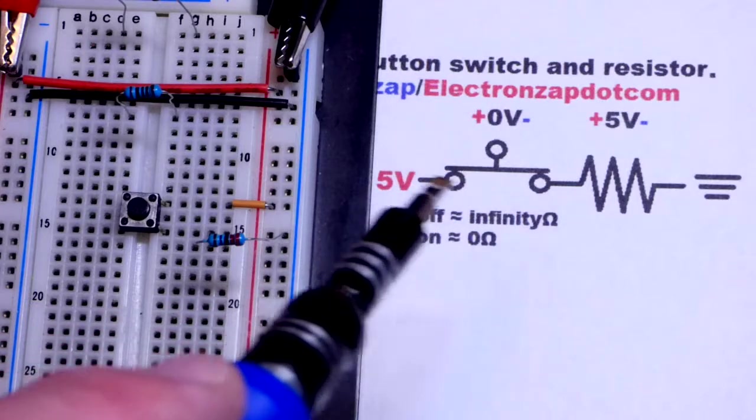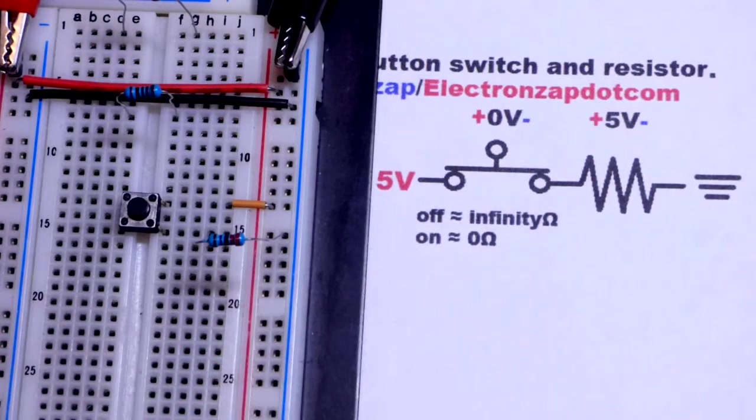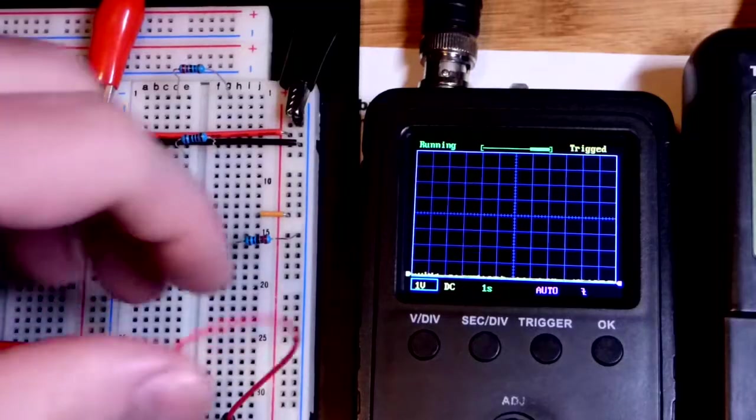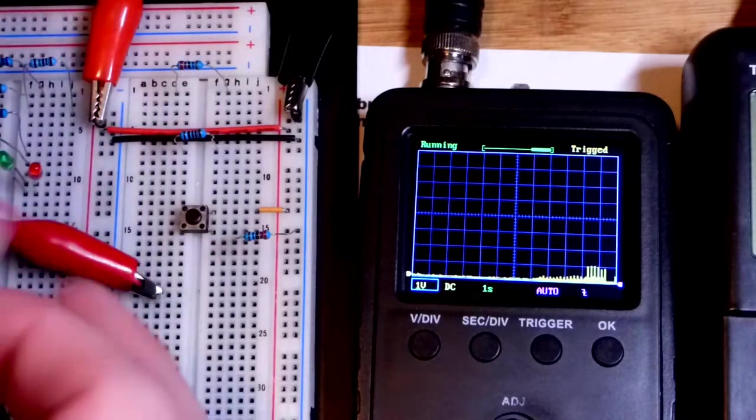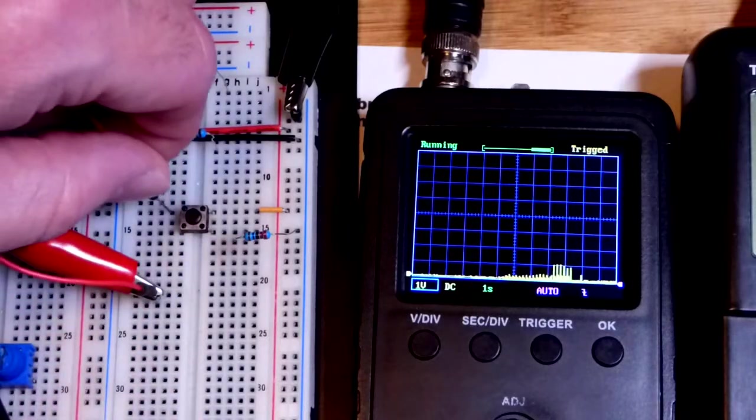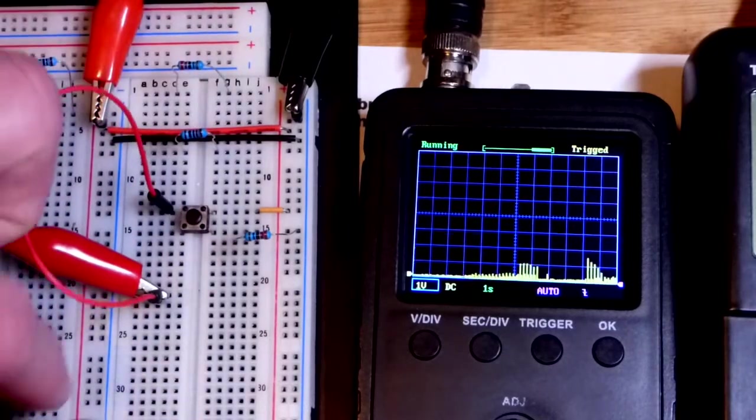That means if you have a resistive component, all of the supply voltage while the switch is closed will be directly across that resistive component. Of course we want to measure those voltages.